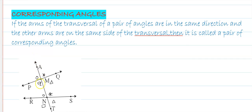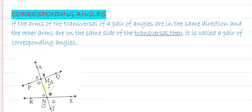Corresponding angles: if the arms on the transversal of a pair of angles are in the same direction, and the other arms are on the same side of the transversal, they are called corresponding angles. For example, angle AMP and angle MNR are corresponding — one arm of each is in the same direction on the transversal (MA and NM), and the other arm is on the same side of the transversal (MP and NR). Angle AMU and its corresponding angle MNS are shown by a star symbol.